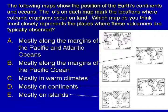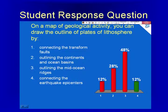Here's a geoscience concept inventory question asking where the edges of plates are in plate tectonics theory — specifically, where do you usually find volcanoes? The right answer is that they're mostly along the margins of the Pacific Ocean, called the Ring of Fire. What I would do in class is give a student response question asking about geological activity in general — not just volcanoes, but where you see earthquakes, volcanoes, and mountain building. It's the same concept. I wanted to make sure I wasn't just teaching to the specific inventory questions.